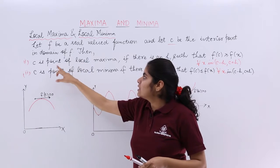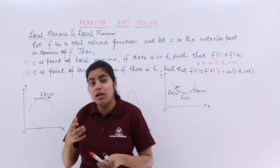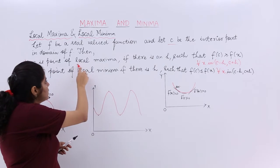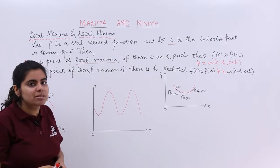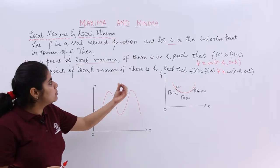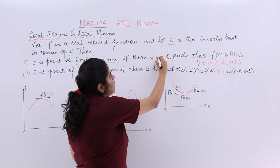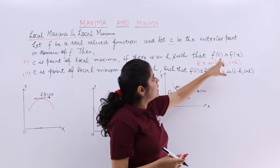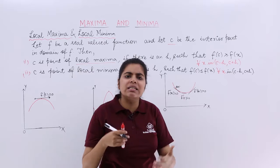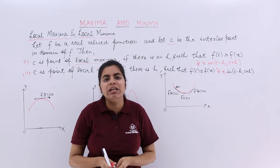Then two points are given. c is a point of local maxima if what happens? So the maxima we have studied, now it is the turn of local maxima. So c would be local maxima if there is an h, if there is an h such that f of c is greater than equal to f of x. It is similar to f of a greater than equal to f of x.